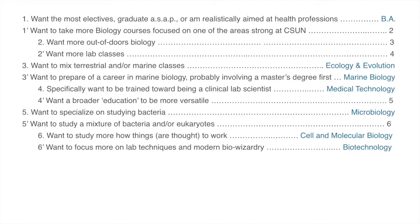Or do you want a broader education and to be more versatile, taking lots of different lab classes? Couplet 5 addresses whether you specifically want to work on bacteria, in which case you would choose the microbiology option, or whether you want to work with eukaryotes and maybe some bacteria as well, in which case you move to couplet 6. In couplet 6, we distinguish between cell and molecular biology and biotechnology. These are very similar options: cell and molecular biology is weighted a bit more toward lecture and understanding how things work, whereas biotechnology is weighted more toward lab techniques and bio-wizardry.